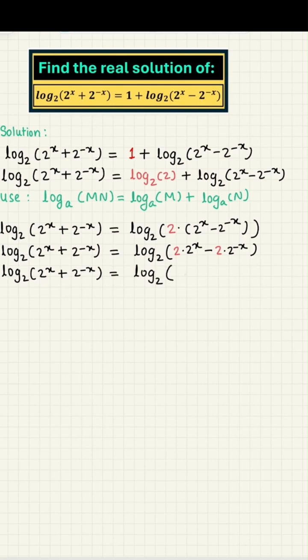We now have log to the base 2 of 2 to the power x plus 2 to the power minus x on the left-hand side, equal to the log to the base 2 of 2 to the power 1 plus x minus 2 to the power 1 minus x on the right-hand side. Since it is log to the base 2 on both sides, this means that the arguments equal each other.